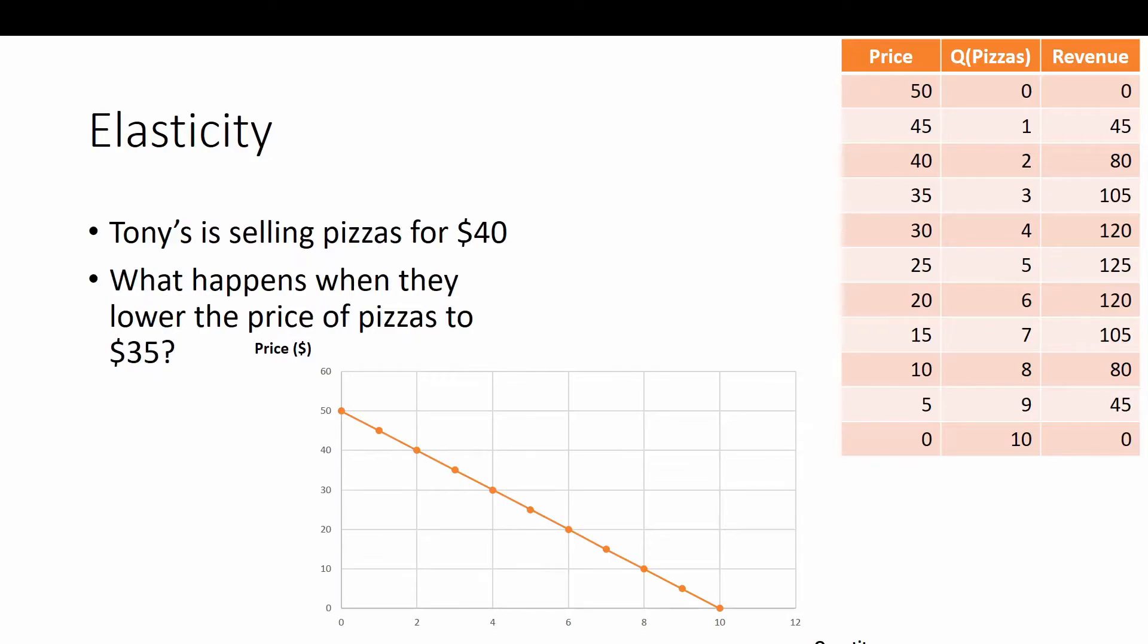Let's say Tony is selling pizzas for $40. We want to know what's going to happen if Tony decides to lower the price to $35. First off, let's calculate the revenue for $45 a pizza.